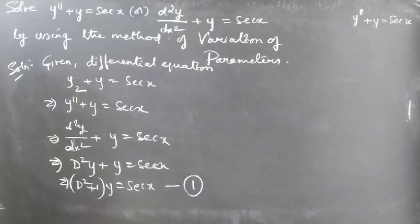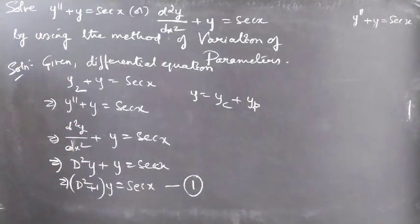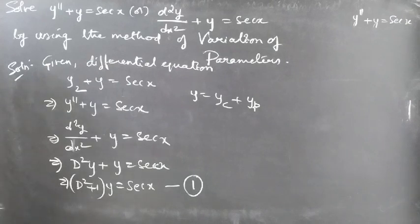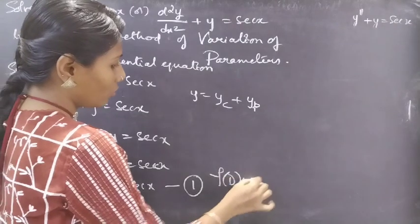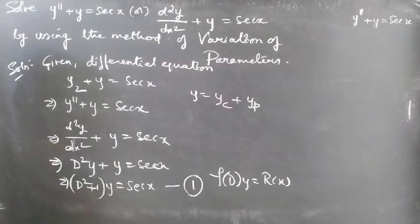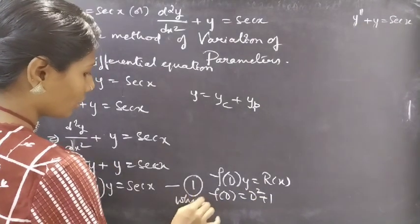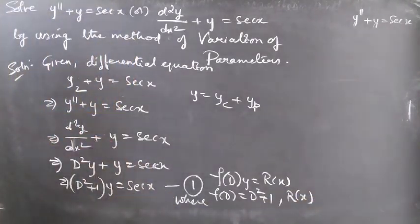We need to find the general solution of this equation, given by y = yc + yp. We'll find yc using the auxiliary equation, and later find yp with the help of yc. This equation is in operator form f(D)·y = r(x), where f(D) = D² + 1 and r(x) = sec(x).